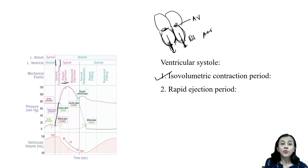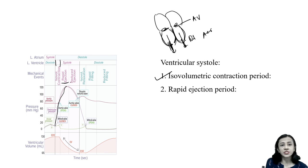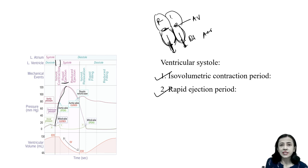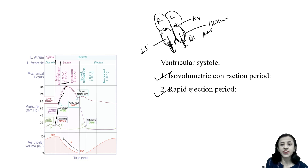During the rapid ejection phase, ventricular contraction is powerful and therefore there is again a rise in intraventricular pressure. This is why intraventricular pressure increases during rapid ejection phase in spite of blood being ejected. Left intraventricular pressure rises as high as 120 mmHg (equal to aortic pressure), and right intraventricular pressure becomes 25 mmHg.